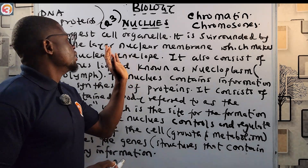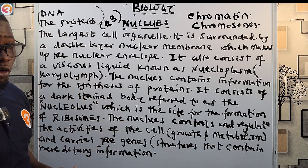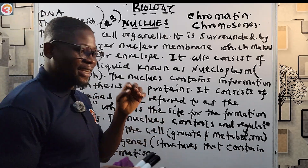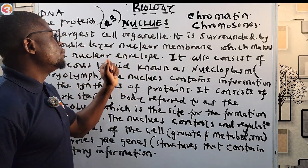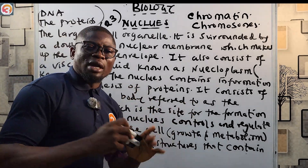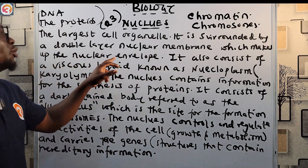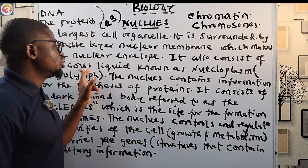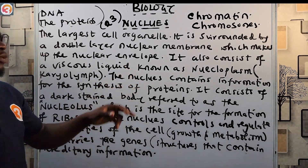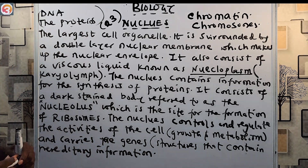The nucleus is surrounded by a double-layer nuclear membrane, which makes up the nuclear envelope with two layers. It also consists of a viscous liquid known as the nucleoplasm — also called the karyolymph. The nucleus contains information for the synthesis of protein.